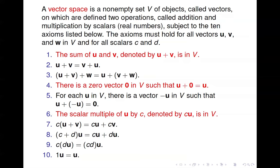Number five says for each vector in the set, you have another vector such that when you add it to the first you end up with a zero vector — essentially every element has an additive inverse in the set. Number six says the scalar multiple of any vector by a constant c, denoted c times u, is in the set. So axioms one, four, and six all specifically refer to whether or not particular elements are in the set — that will be important as we go along. Numbers seven through ten are standard properties, including distributive properties and the multiplicative identity: one times any element in the set equals that element.